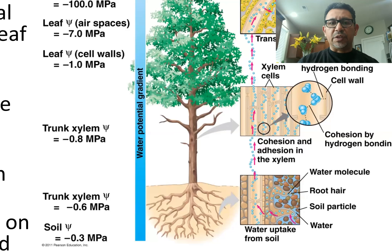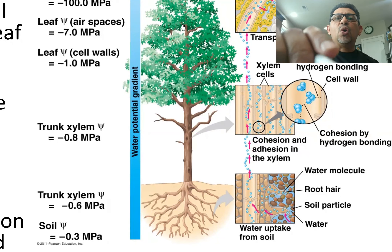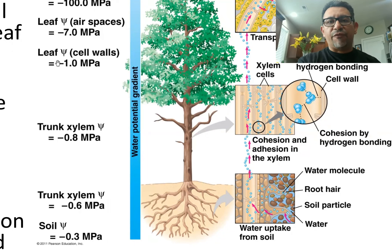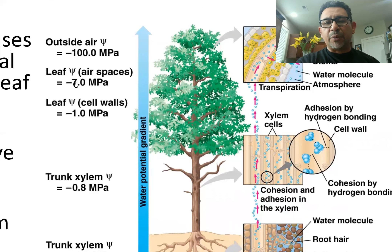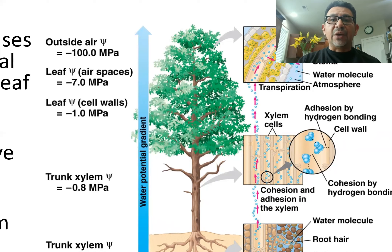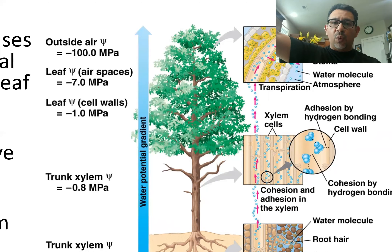Continuing up the plant, at the leaves, the water potential is negative 1 megapascal — much lower than in the soil. In the air spaces of the leaf, the water potential is negative 7, and in the outside air, it can be as low as negative 100 megapascals. This continuous decrease in water potential is exactly what allows the plant to pull water using negative pressure as a consequence of this water potential gradient.